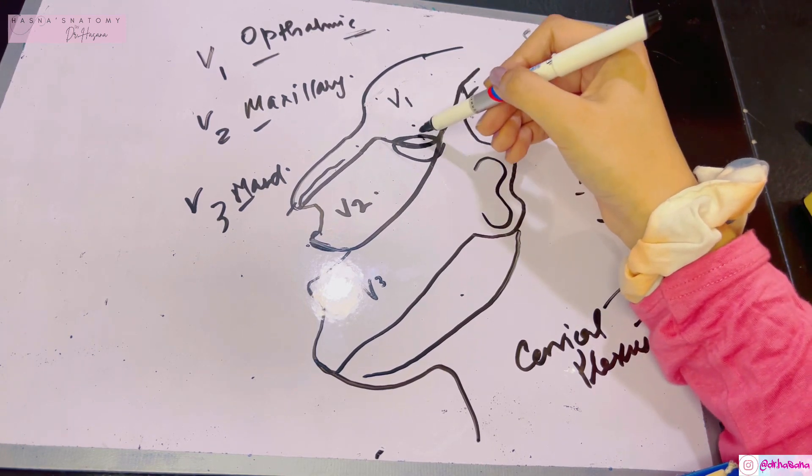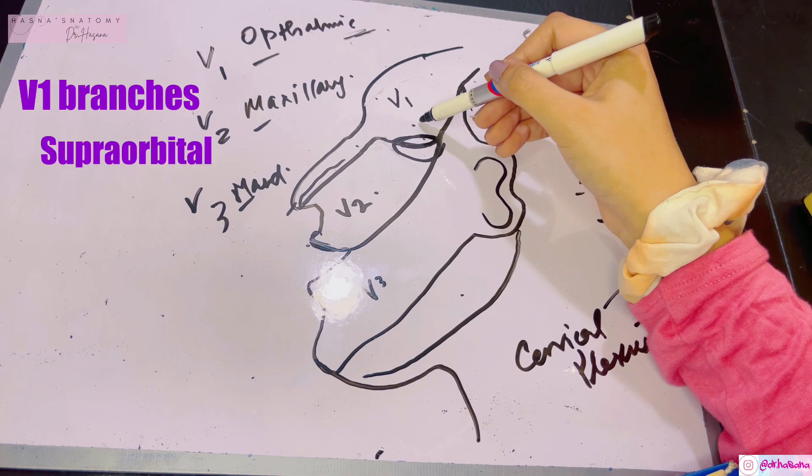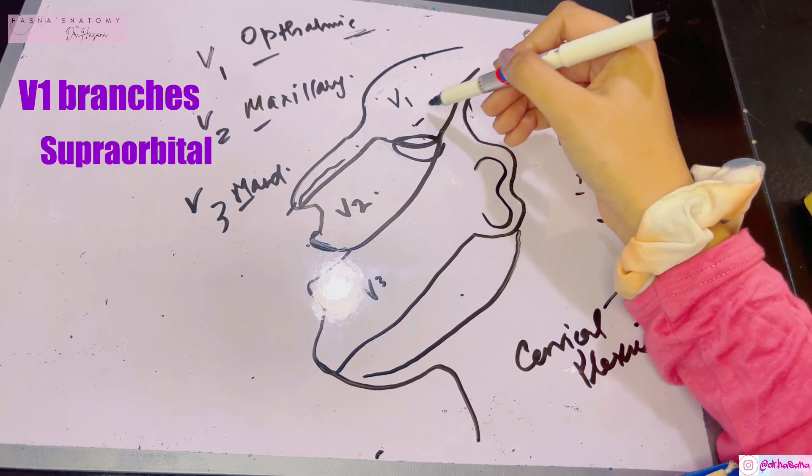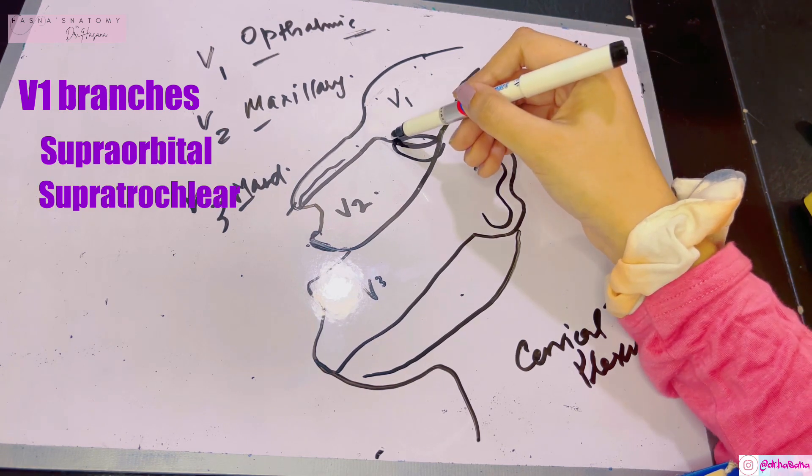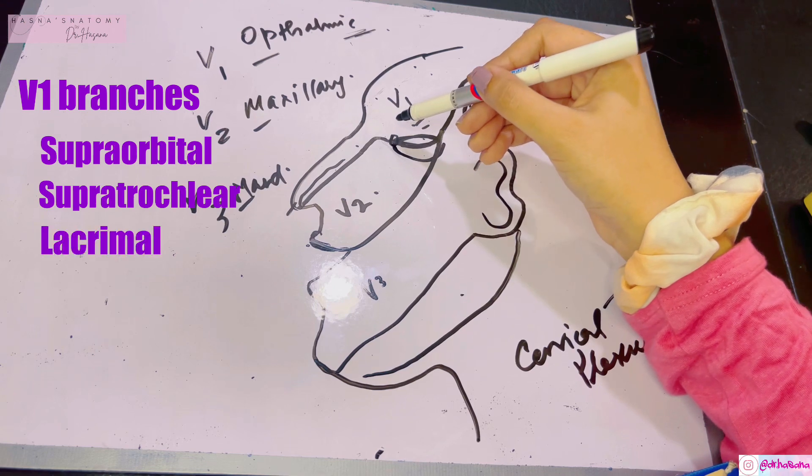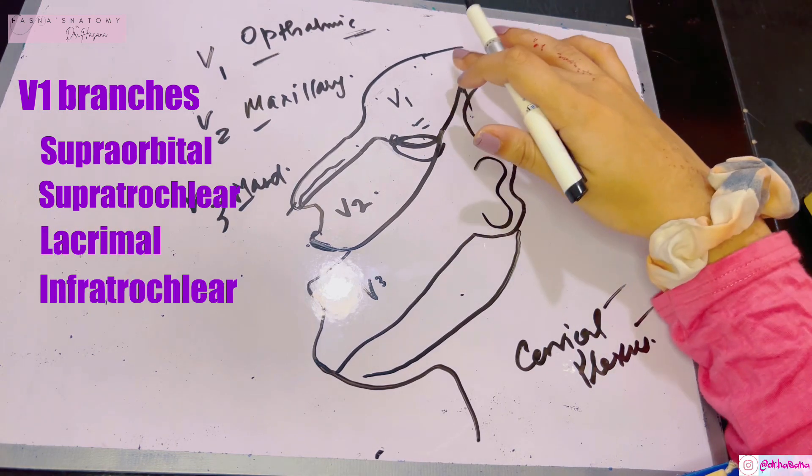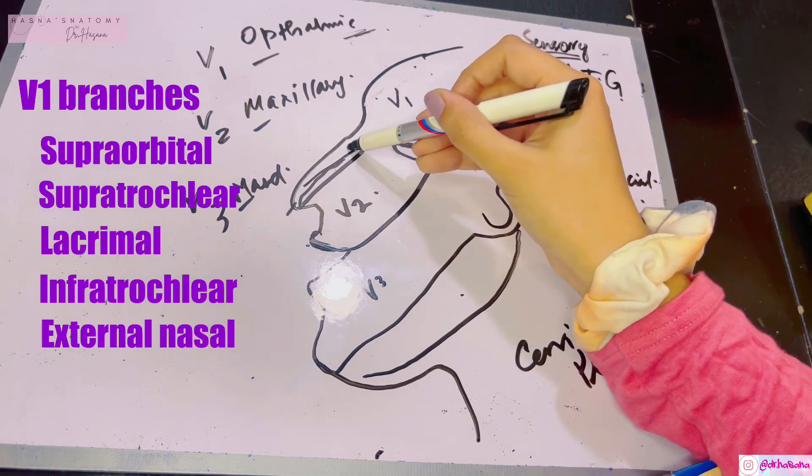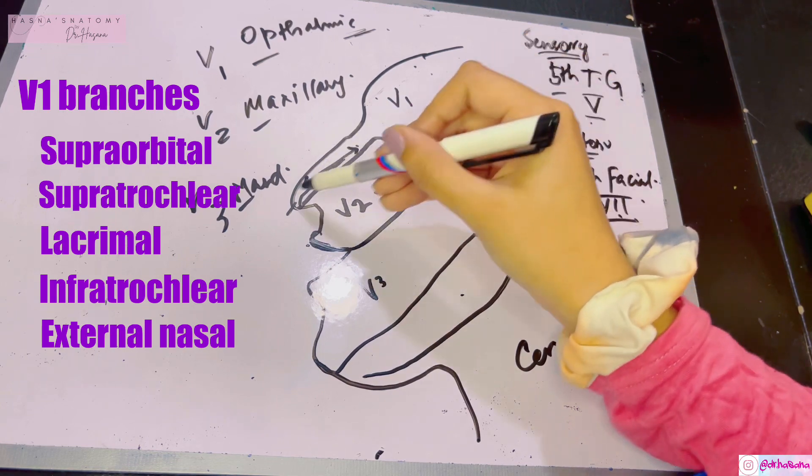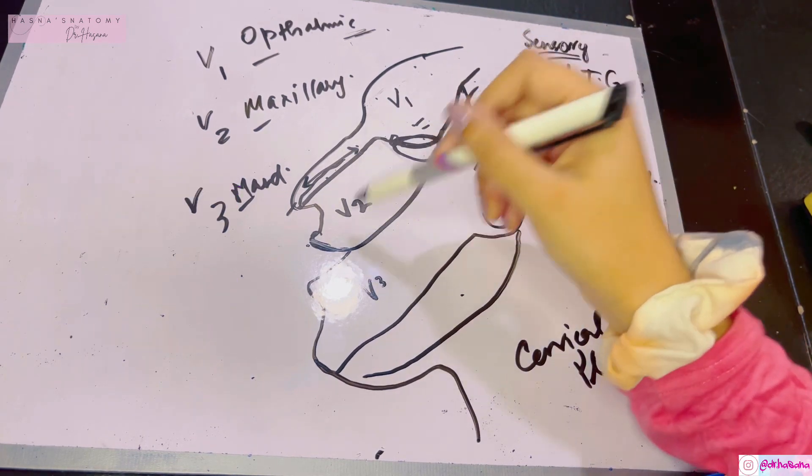Then we have supratrochlear. Over here lies your lacrimal gland, so there's the lacrimal nerve, also infratrochlear, and the external nasal nerve because you're supplying the external part of the nose.